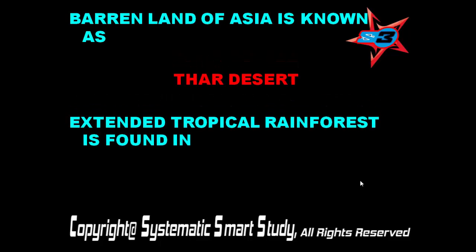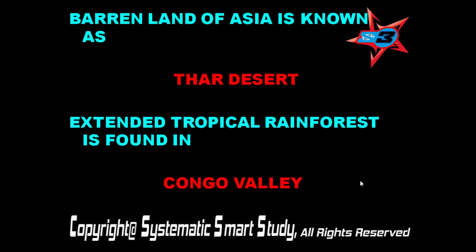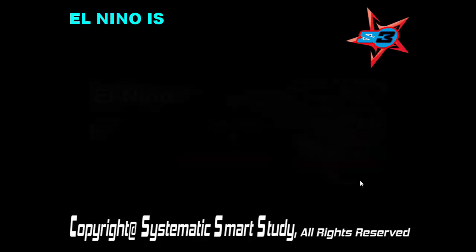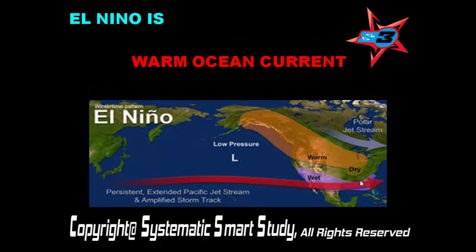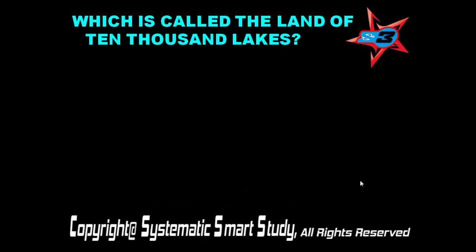Extended tropical rainforest is found in Congo Valley. El Nino is a warm ocean current. Minnesota is called the land of 10,000 lakes.